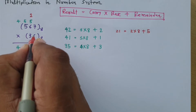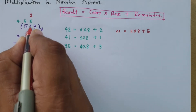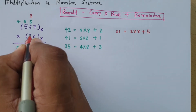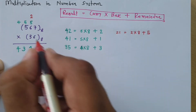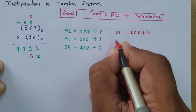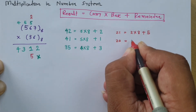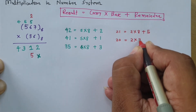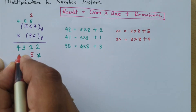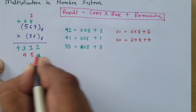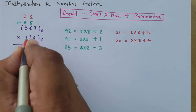Now 3 into 6 is 18, plus carry 2 gives 20. Writing 20 in octal: 2 × 8 plus 4 equals 20. So 4 is the remainder, placed in the result, and 2 is the carry, taken to the next position.